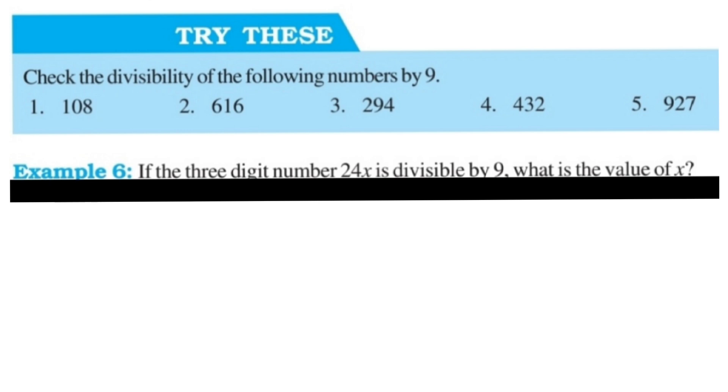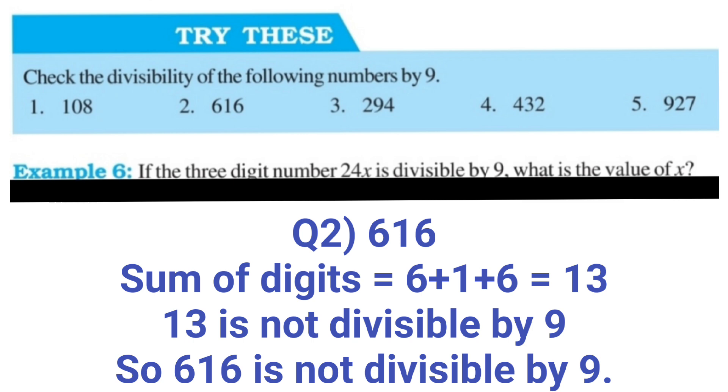Second question is 616. Now find the sum of digits of 616. So 6 plus 1 plus 6 is 13 and 13 is not divisible by 9. So the number is also not divisible by 9. 616 is not divisible by 9.